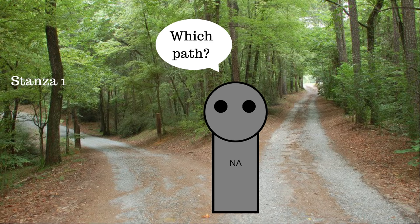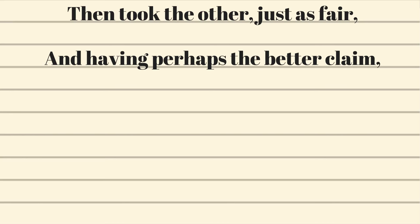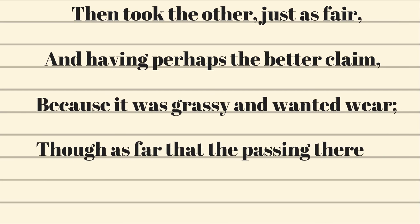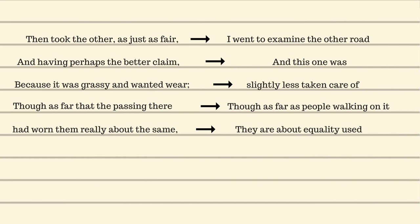In stanza one, our narrator comes across two roads, not knowing which one he should take. In stanza two, he examines them and comes to the conclusion that they are the same. That's right, the roads are the same. As Frost writes: 'then took the other, just as fair, and perhaps having the better claim, because it was grassy and wanted wear. Though as far as passing there had worn them, really about the same.' So in other words, stanza two is saying: I went to examine the other road, and this one looks slightly less taken care of, though as far as people walking on it, they are about equally used.